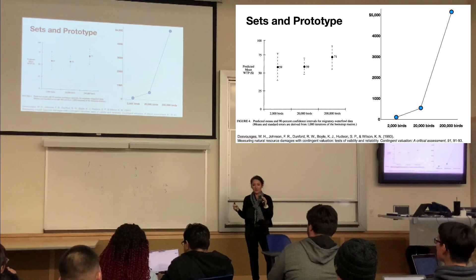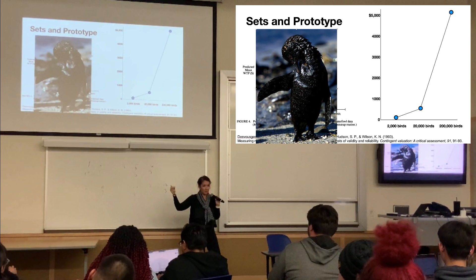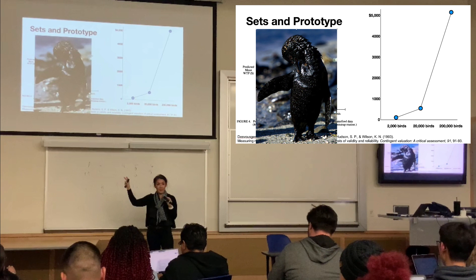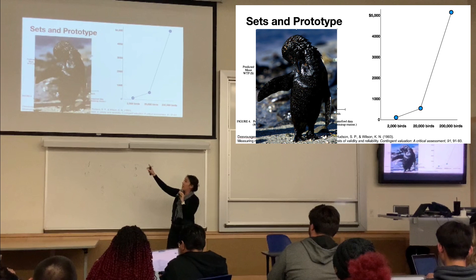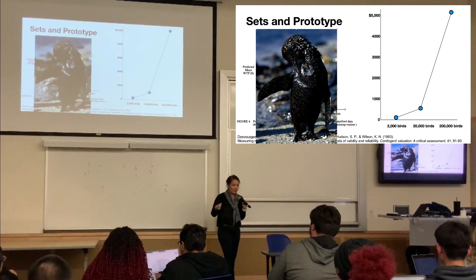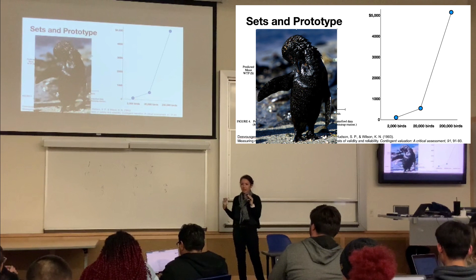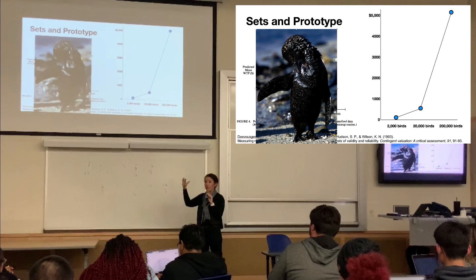What we do in our mind is we don't actually think about the numbers — we're not doing a calculation. We think about birds. We think of a prototype in our mind of a bird in an oil spill, and the amount of money we're willing to pay is associated with that prototype — this archetype of what a sad bird looks like. They didn't do this, but I bet if they asked how much you'd pay to save one bird, it would also be about $59.